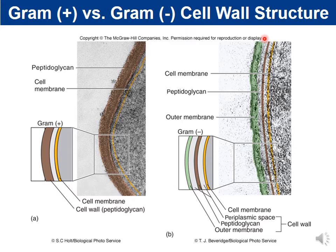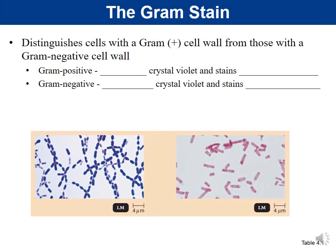Typically, gram-negatives have that periplasmic space because they have both the cell membrane and the outer membrane, whereas gram-positives have the cell membrane and then the thick layer of peptidoglycan. The gram stain is a differential stain that allows us to differentiate bacteria based on differences in their peptidoglycan.